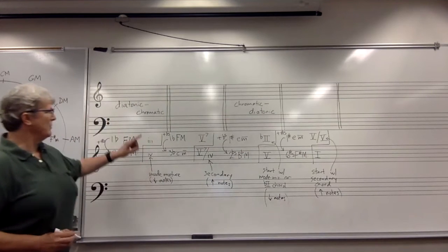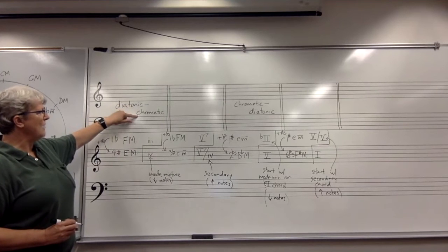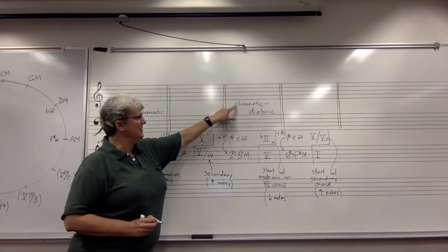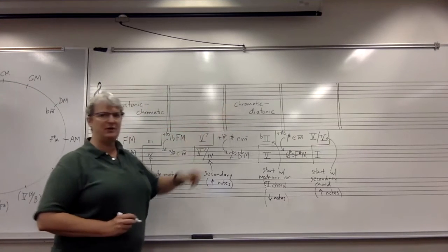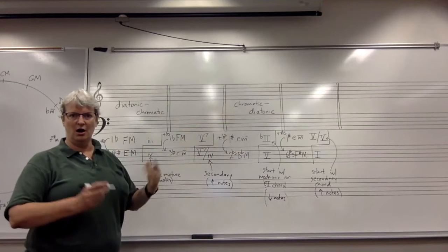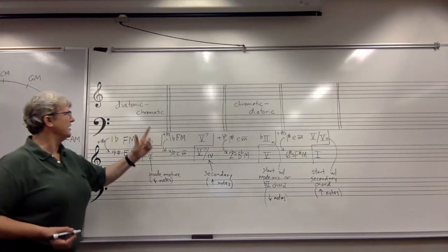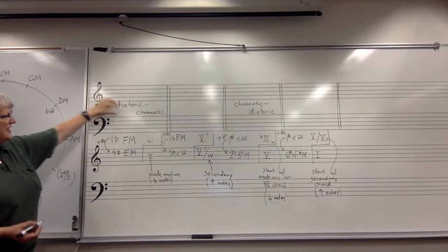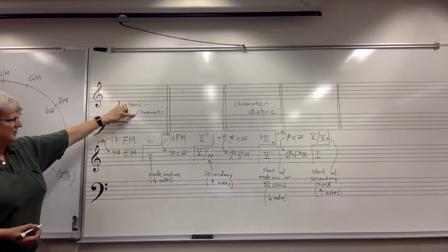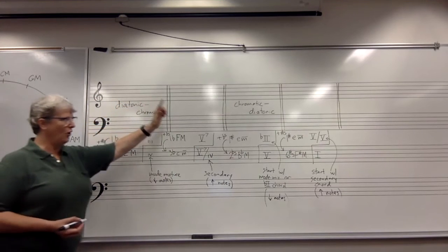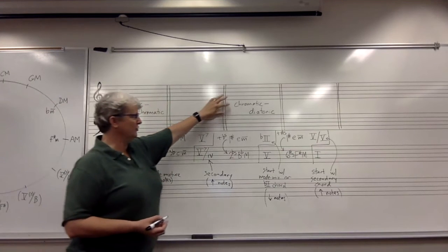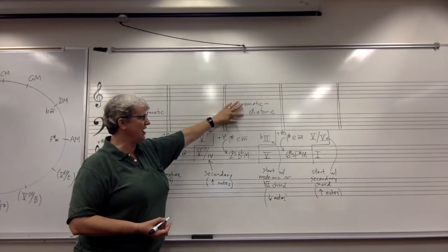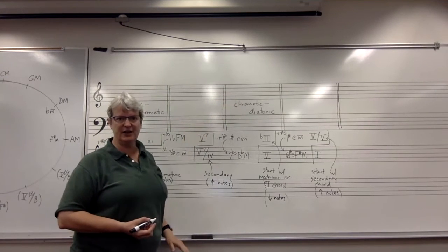Remember that a diatonic-chromatic pivot chord and a chromatic-diatonic pivot chord are just what they sound like. The chord is diatonic in the first key and chromatic in the second key, or the chord is chromatic in the first key and diatonic in the second key.